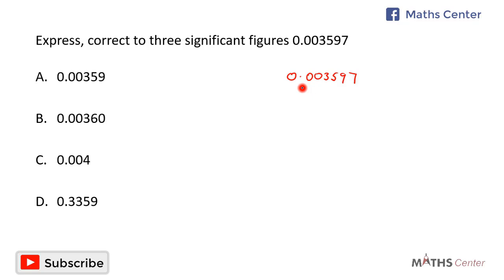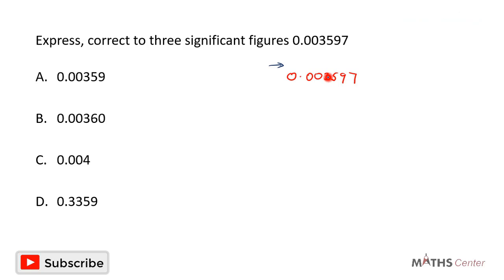Counting from left to right, the first significant figure will be the first non-zero number. The first non-zero number is 3. The number after that will be the second significant figure. So 3 is the first significant figure, the second significant figure is 5, and the third significant figure is 9.